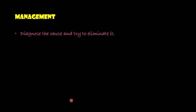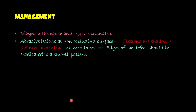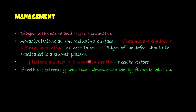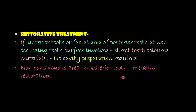Management of abrasion: first, diagnose the cause and try to eliminate it. If the abrasion lesion is at a non-occluding surface and the lesion is shallow — less than 0.5 mm into dentine — there is no need to restore; only smooth the edges. If the lesion is deep — more than 0.5 mm into dentine — restoration is required. If hypersensitivity develops, desensitize using fluoride solutions. For anterior teeth or the facial area of posterior teeth at non-occluding surfaces, no cavity preparation is needed; direct tooth-colored materials such as composite resin or resin-modified glass ionomer cement can be used. In non-stress-bearing areas of posterior teeth, metallic restoration can be done.